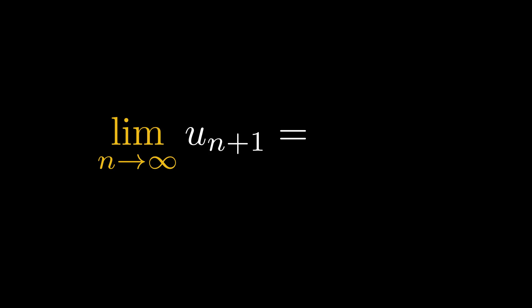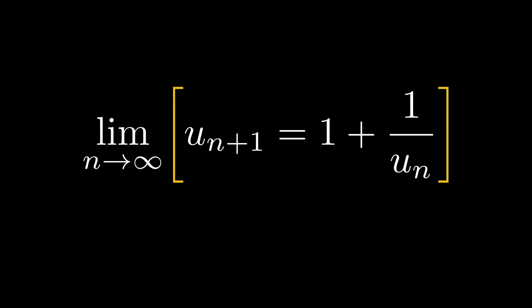Now we can substitute the formula we obtained from the start of the video for the recurrence relationship. To make it clear we are tending n to infinity for both sides of the equation, I'll use square brackets around the entire thing. We can highlight the parts of the equation we're trying to solve for.